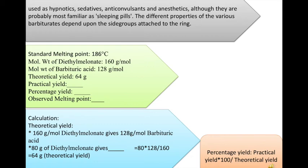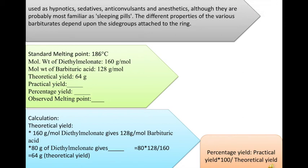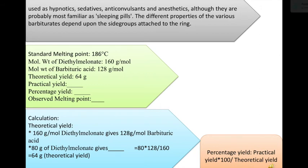The formula is: 80 × 128 ÷ 160, which gives 64 grams — so 64 grams is our theoretical yield. If, for example, we obtain 50 grams from the synthesis, then 50 grams is our practical yield. The percentage yield formula, shown in the orange box, is: practical yield × 100 ÷ theoretical yield = 50 × 100 ÷ 64, giving us the percentage yield.